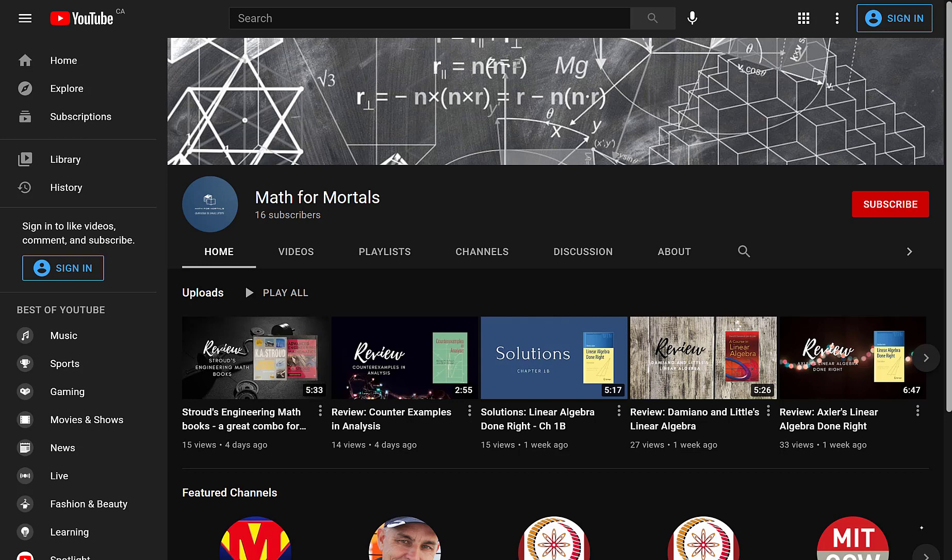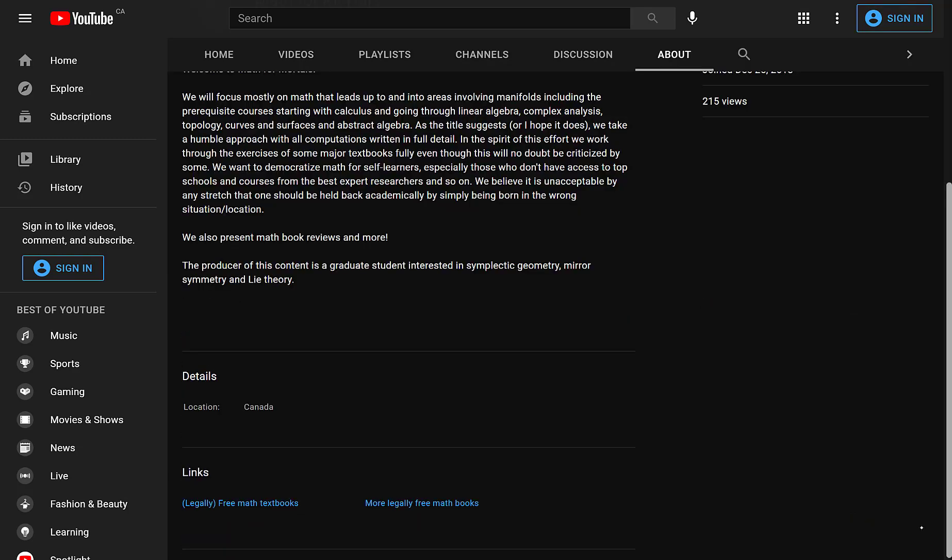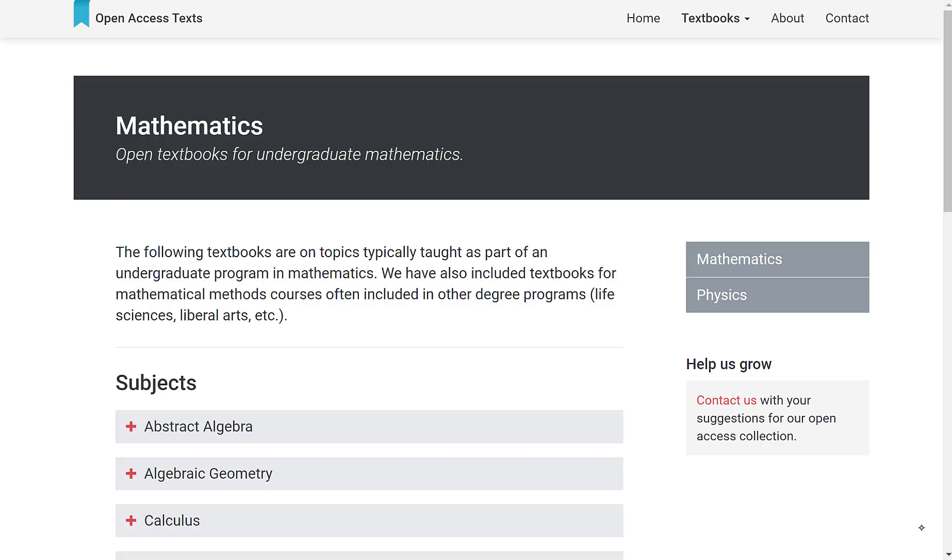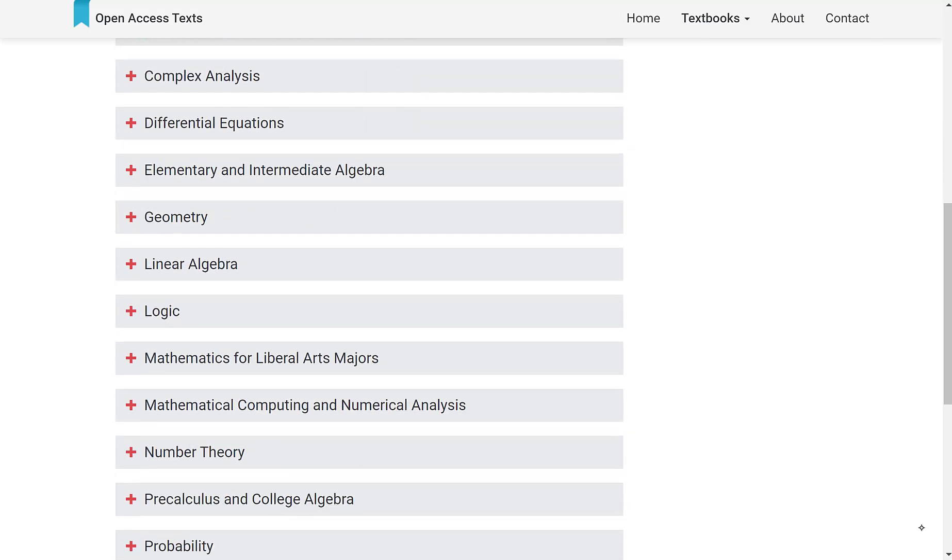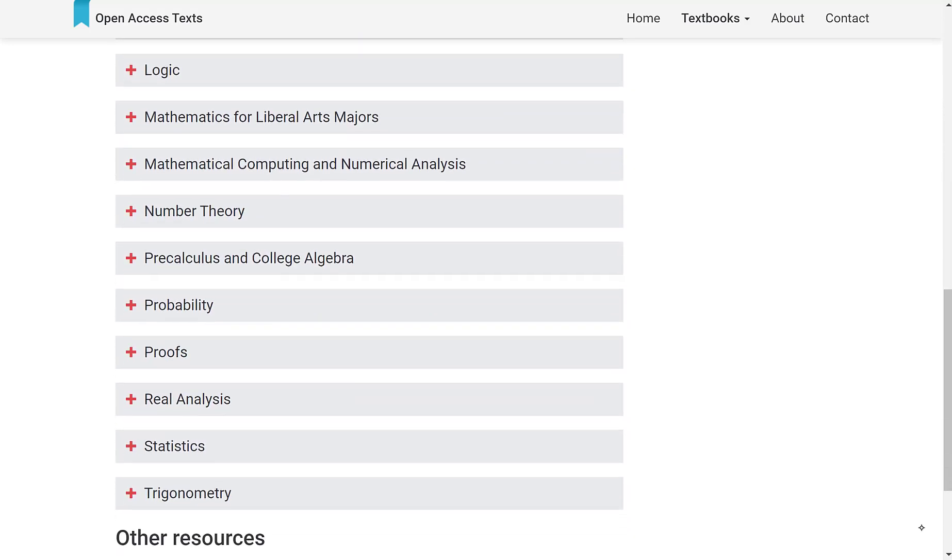But in the past few years that has been changing. So on this channel in the about section I've listed two links. The first one is to openaccesstexts.com, and it has textbooks for various subjects: abstract algebra, calculus, complex analysis, linear algebra, and so on, even real analysis and proofs and some statistics.